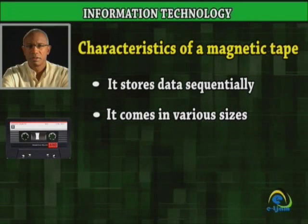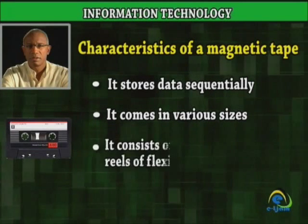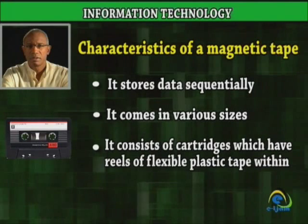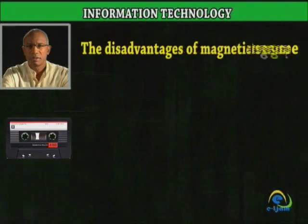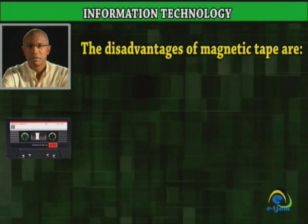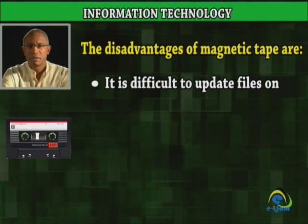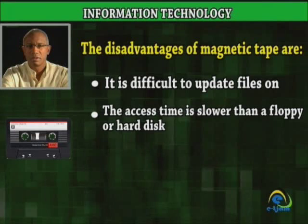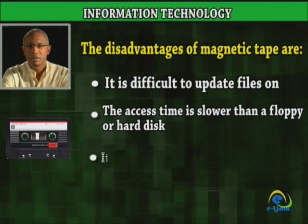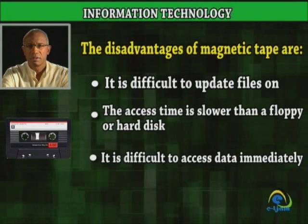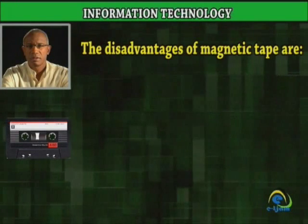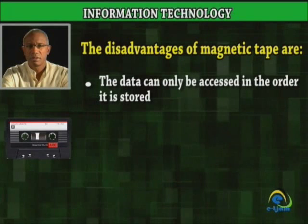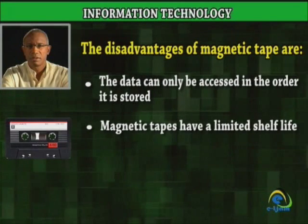It comes in various sizes. It consists of cartridges which have reels of flexible plastic tape within them. The disadvantages of magnetic tape are: it is difficult to update files on, the access time is slower than a floppy or hard disk, it is difficult to access data immediately, the data can only be accessed in the order it is stored, and magnetic tapes have a limited shelf life.